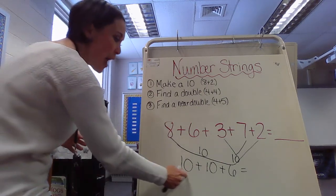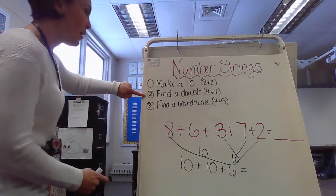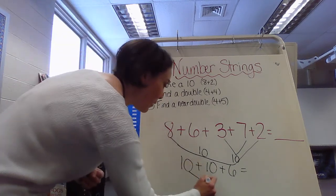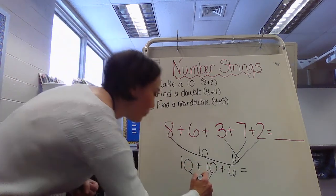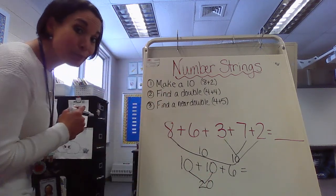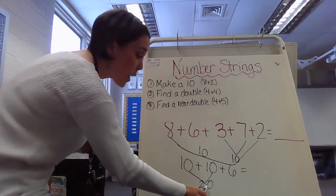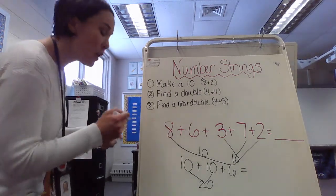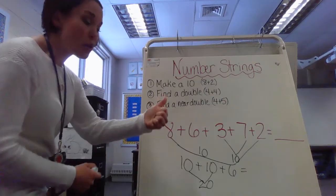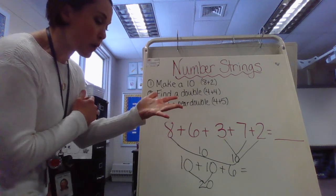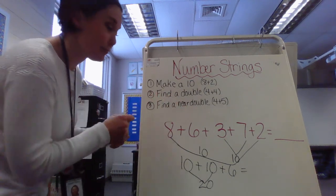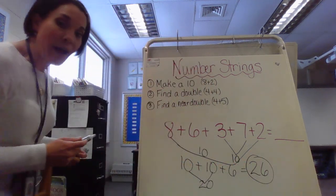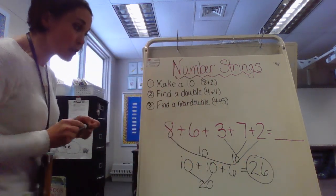And take a look: 10, 10, 6. 10 and 10, look, that's a double. 10 plus 10 is 20. Now 20 plus 6 more. Easy peasy, guys. 20, 21, 22, 23, 24, 25, 26. There is your final answer. Your final answer is 26.